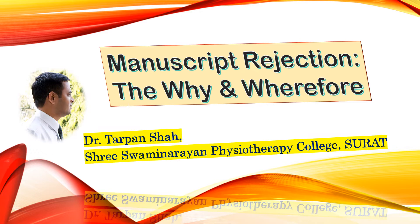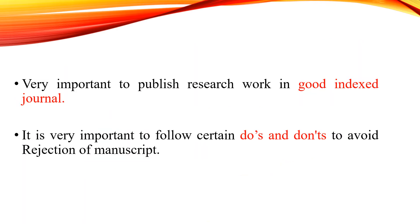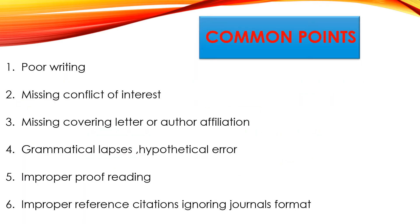It is very important for us to follow certain do's and don'ts to avoid the rejection of the manuscript. Certain common points to follow to avoid rejection include: poor academic writing, not mentioning the conflict of interest, not writing a covering letter, and not properly mentioning the author's affiliation, grammatical lapses, typographical errors, improper proofreading, improper reference citation, and ignoring the journal's format.